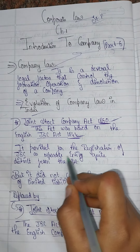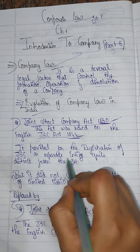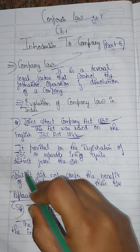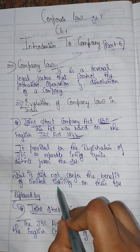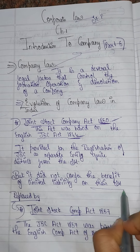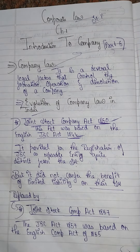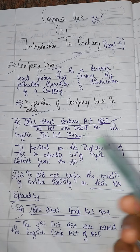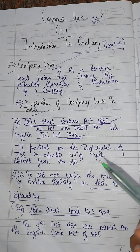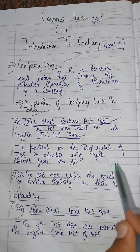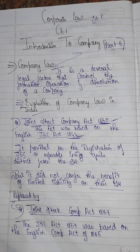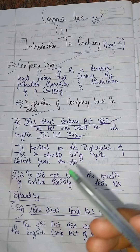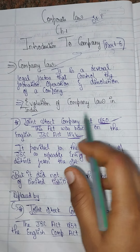The 1844 Act provided for the registration of joint stock companies as a separate legal entity, quite distinct from shareholders. However, it did not confer the benefit of limited liability to the shareholders.